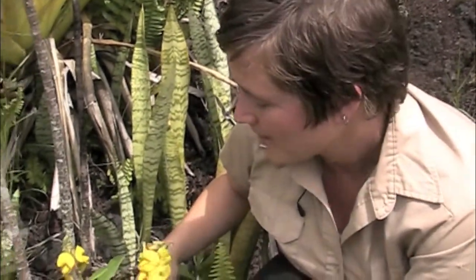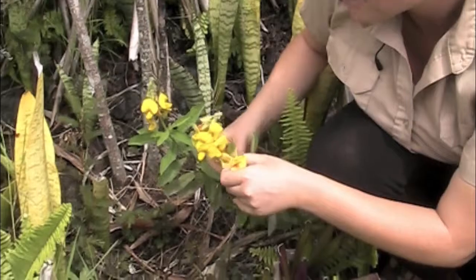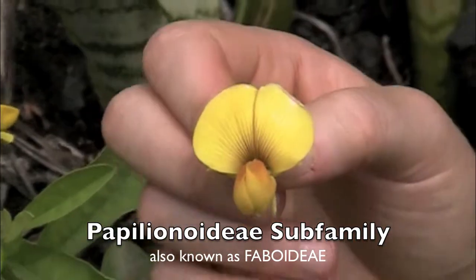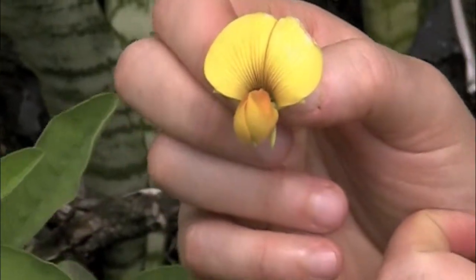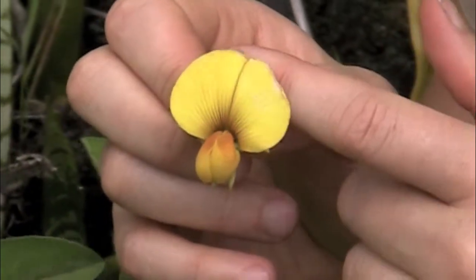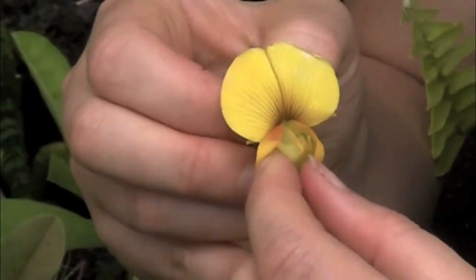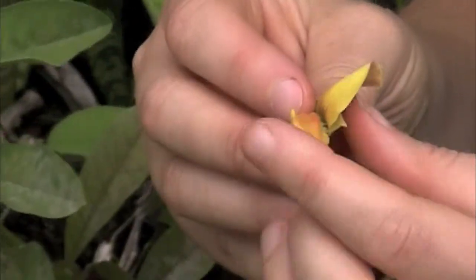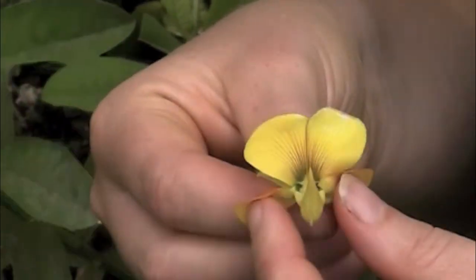I found another member of the Fabaceae with a very specialized flower structure — a member of the Papilionoideae subfamily. This is what you might typically think of as a legume flower because it looks like a pea. We call this the banner, wings, and keel pattern. The big showy banner on top advertises to pollinators. There are two wings on the sides, and when I pull the wings apart I expose the keel, which looks like the keel of a boat — curved and closed — and it hides the sexual parts.